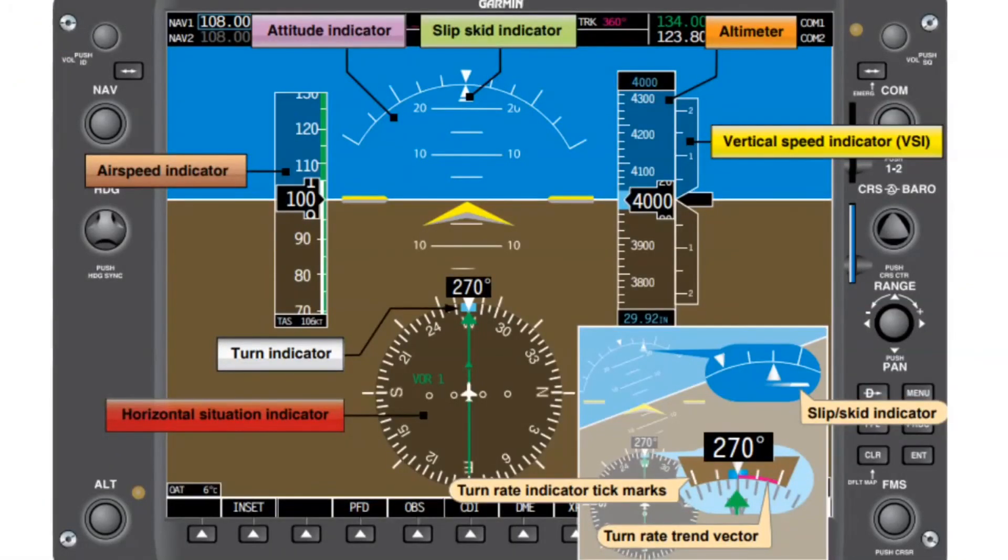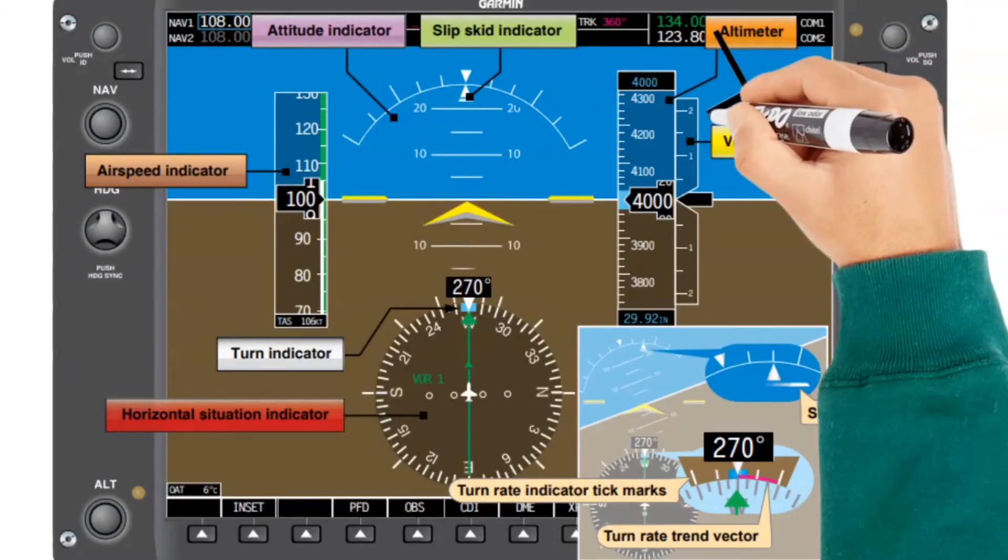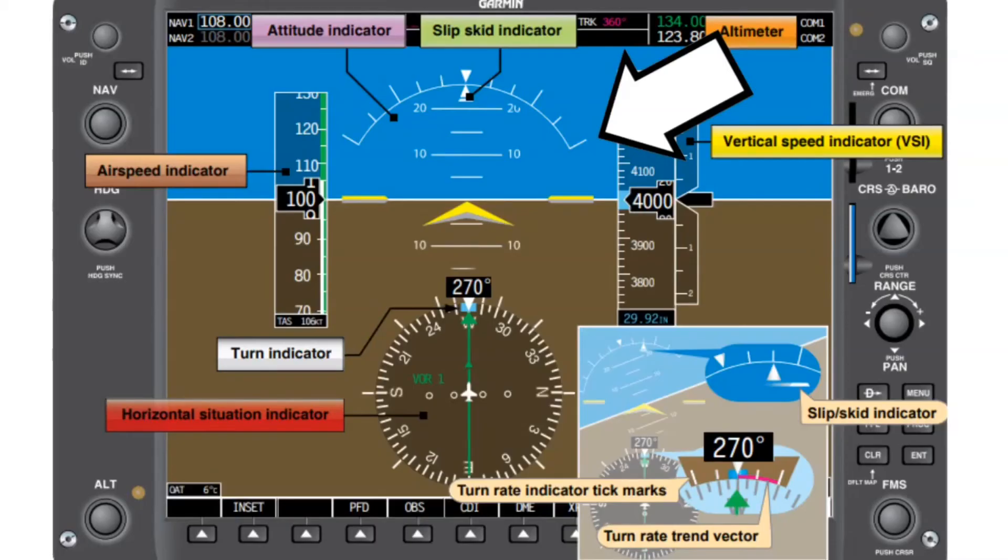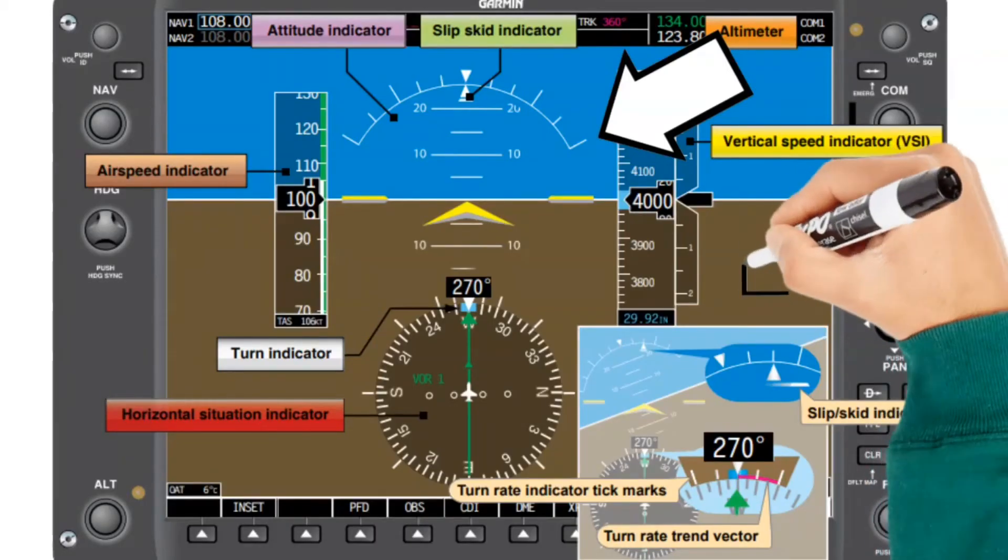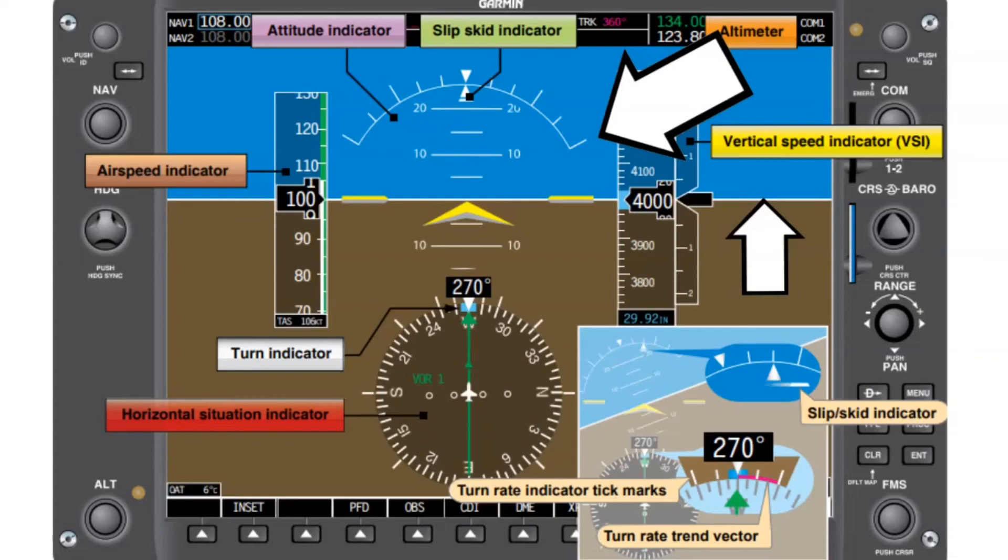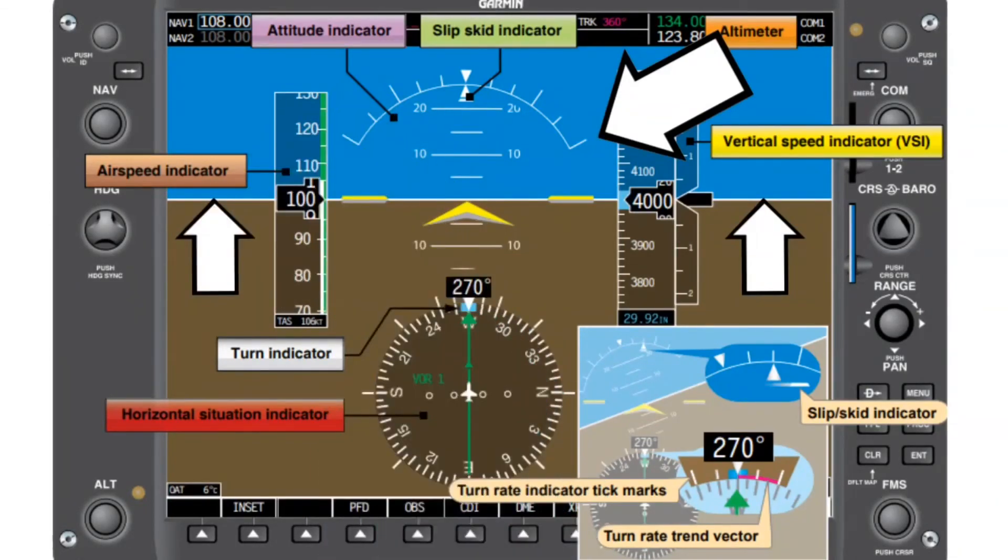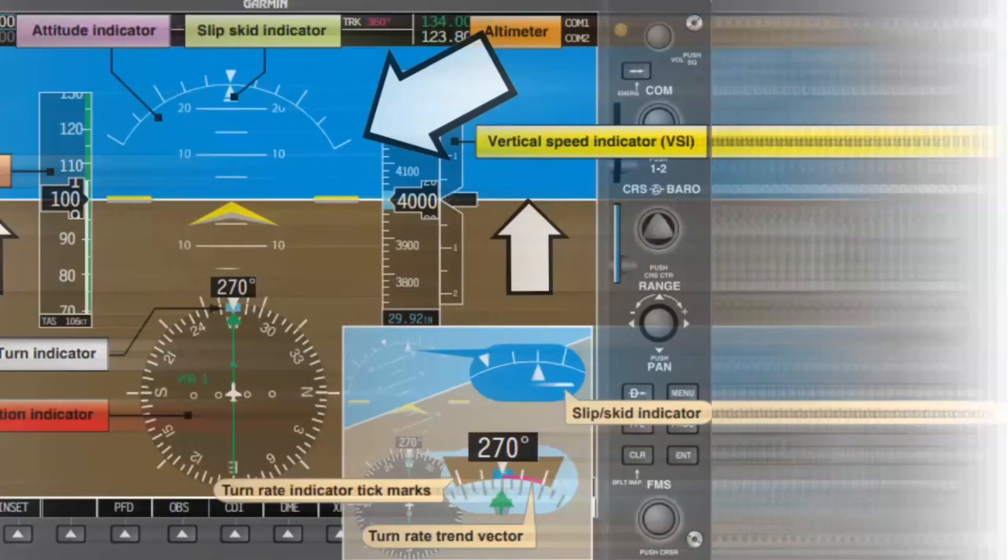Now, if you're lucky enough to fly an airplane with digital flight instruments like this one, you'll notice that the attitude indicator is huge on this guy. And probably the biggest difference is that the horizon line spans the entire length of the primary flight display, also known as the PFD. And that makes it really easy for the pilot to distinguish between the sky and the dirt.